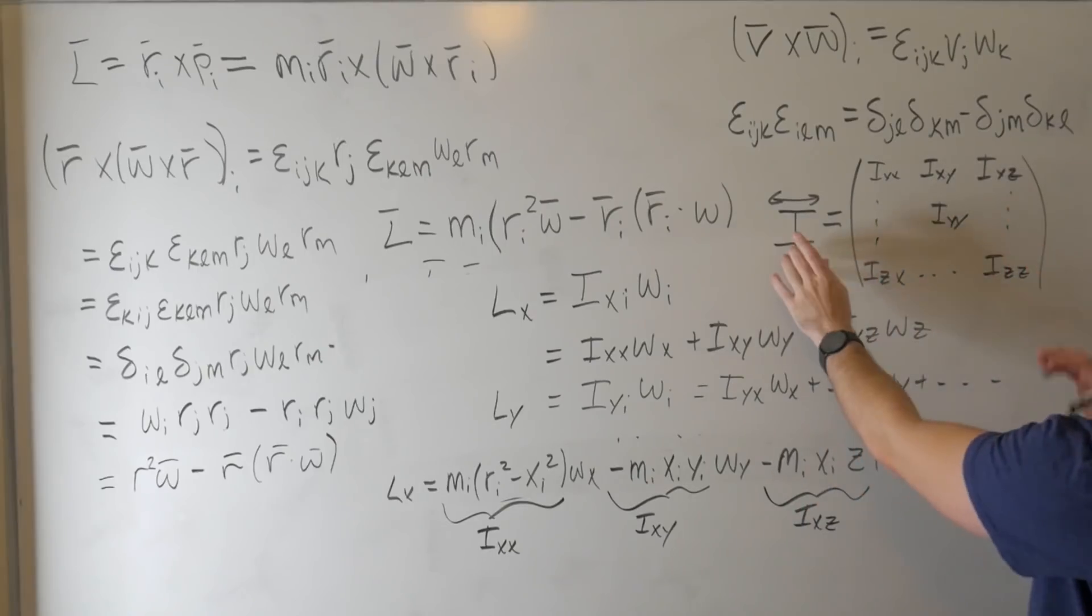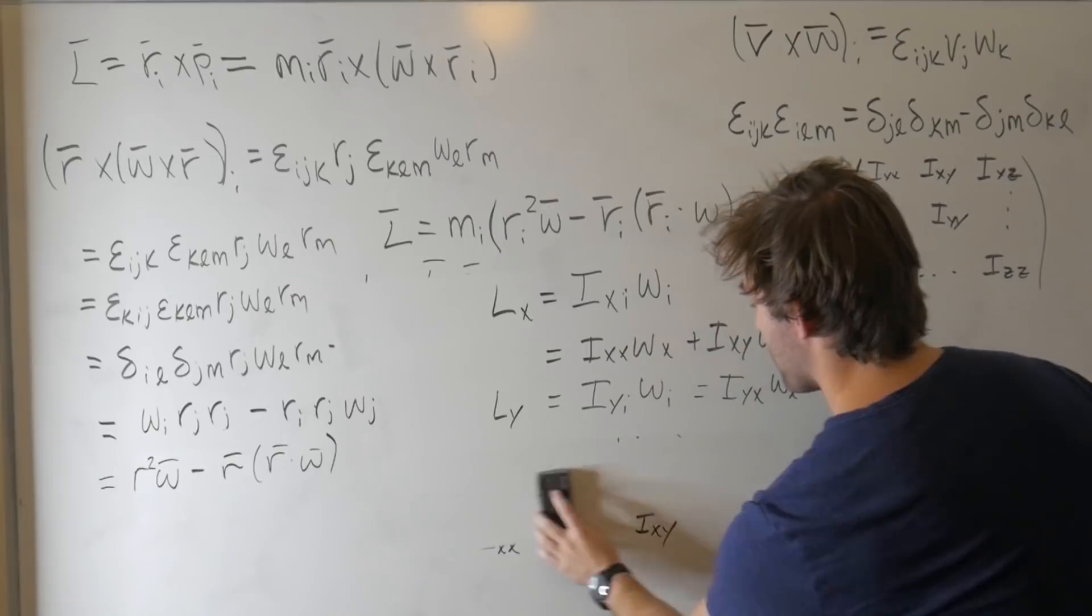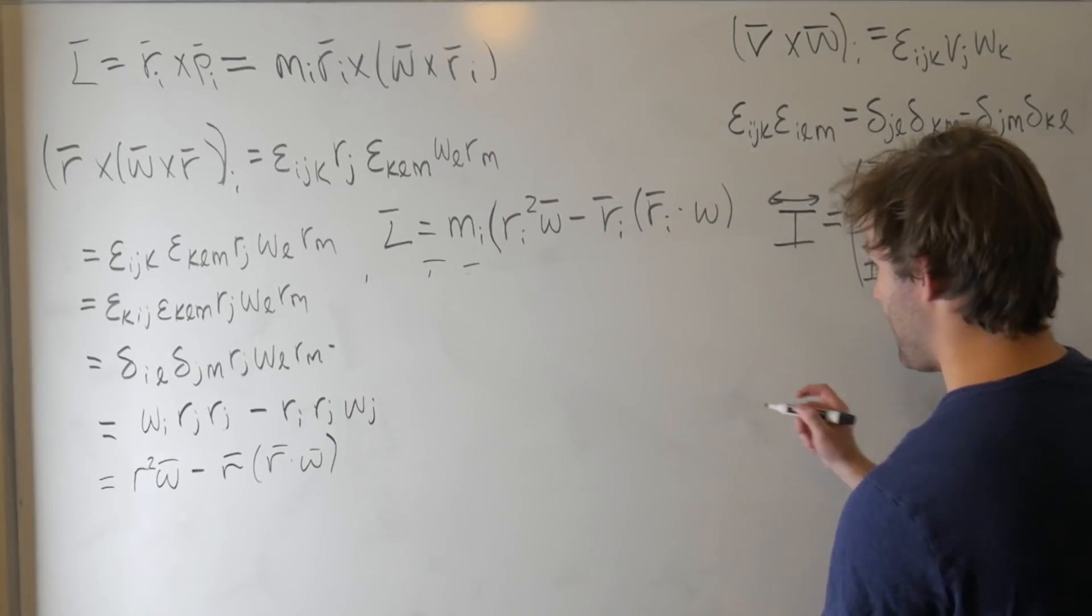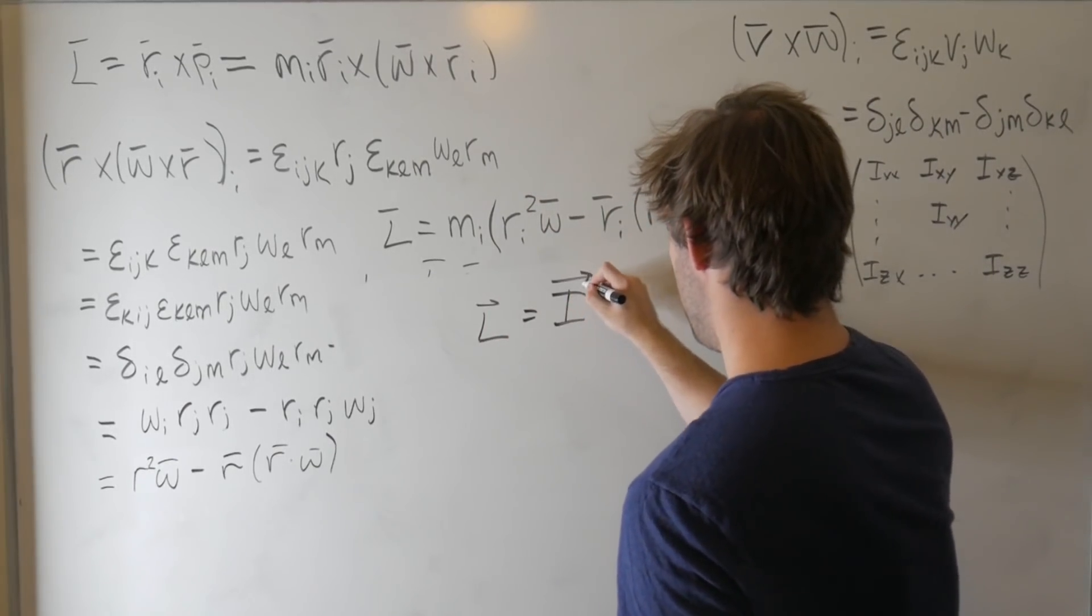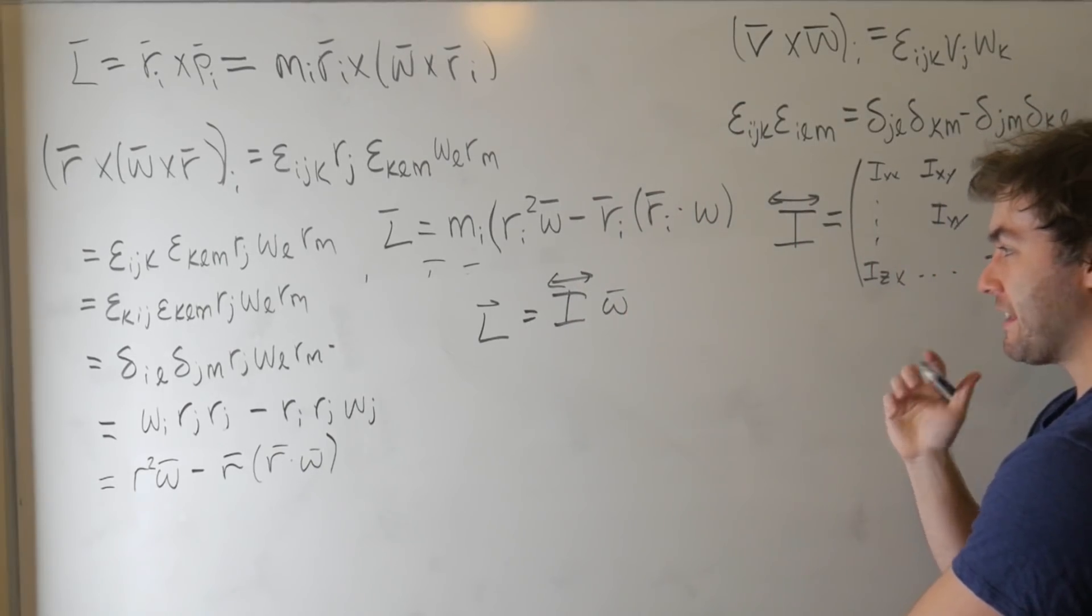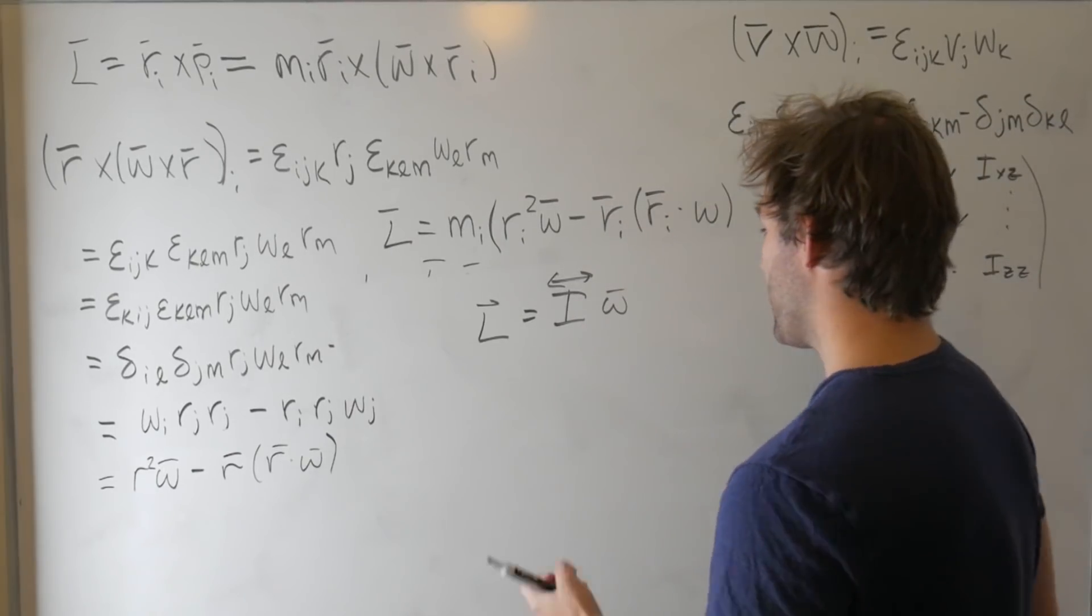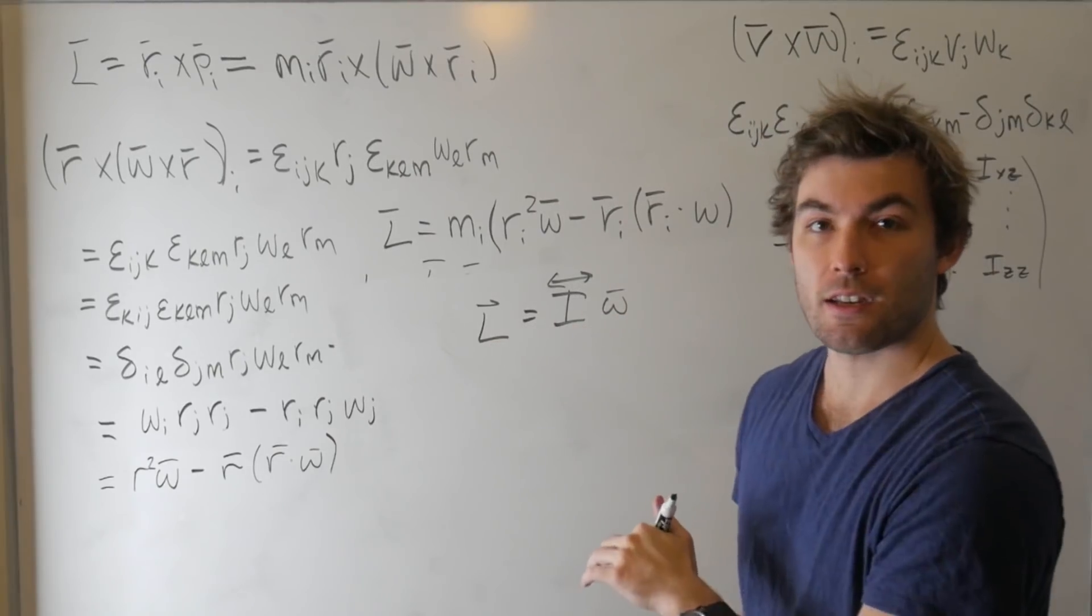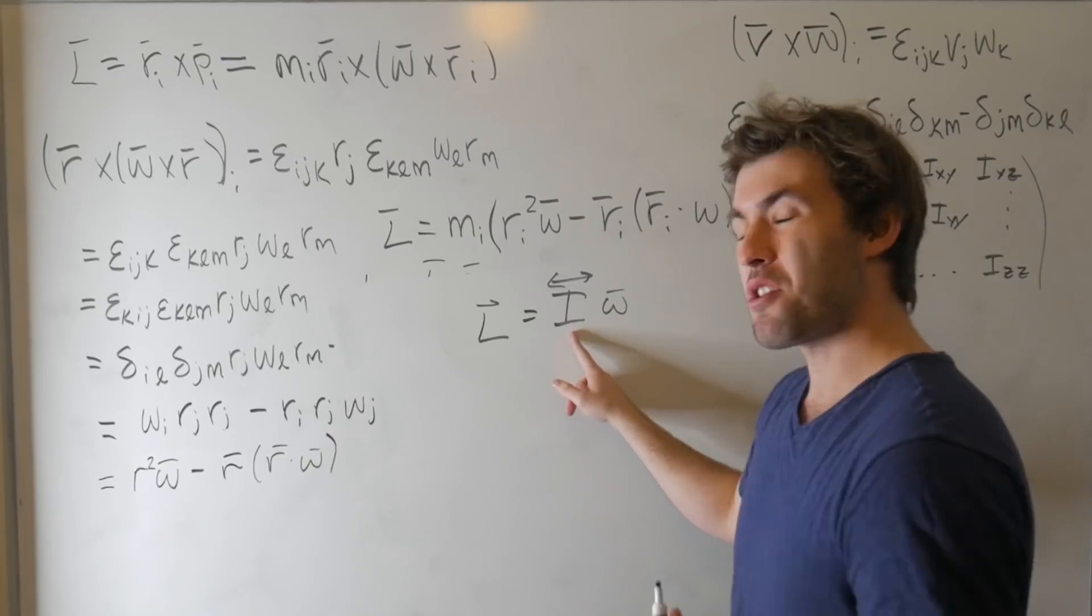And what this whole thing allows you to simplify this entire expression even further, to where now we can write angular momentum as the following. L vector is equal to I omega vector. And this makes it super suggestive. Writing it in this linear algebra notation makes it glaringly obvious that there's a connection between angular momentum and angular velocity. And that connection is a linear transformation that is made possible through the inertia tensor.